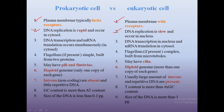In prokaryotic cells, DNA transcription and mRNA translation occur simultaneously in the cytosol — both processes go on together. In eukaryotes, DNA transcription occurs in the nucleus, and then the mRNA comes out of the nucleus into the cytosol where ribosomes are present and translation takes place, producing proteins.